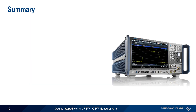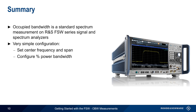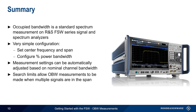Let's end with a brief summary. Occupied bandwidth is one of the standard spectrum measurements on Rohde & Schwarz FSW series signal and spectrum analyzers. Configuring an occupied bandwidth measurement is very straightforward — simply set the center frequency of the signal and an appropriate span, then configure the percent power bandwidth. If the nominal channel bandwidth is entered, the Adjust Settings button will automatically configure measurement parameters such as span and resolution bandwidth. If multiple signals are present within a user-defined span, the Search Limits function can be used to choose which signal should be measured. Occupied bandwidth measurement results are displayed in both graphical and numerical formats.